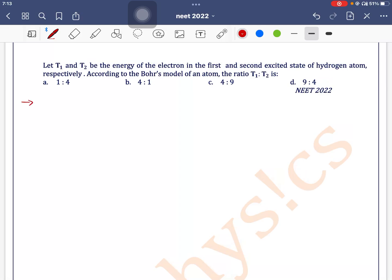Let T1 and T2 be the energy of the electron in the first and second excited state of a hydrogen atom respectively. According to the Bohr's model of an atom, the ratio T1:T2 is?